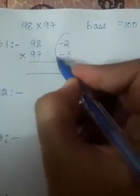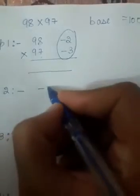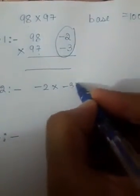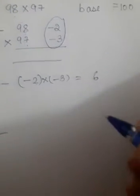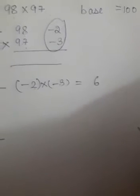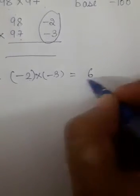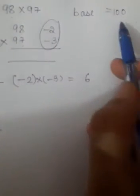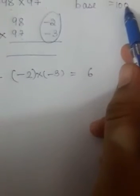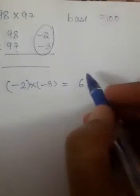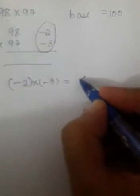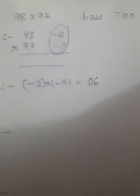The next step is to multiply the deviations: minus 2 into minus 3. You all know 2 into 3 is 6, and minus times minus gives you plus, so the answer is 6. But you will not write it as just 6. Since the base 100 has two zeros, you write it as 06.